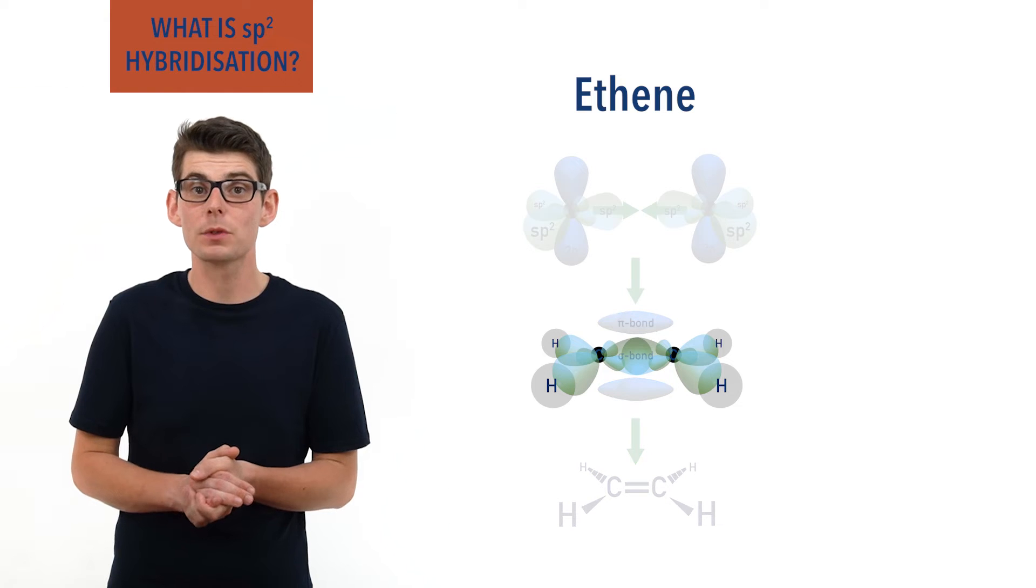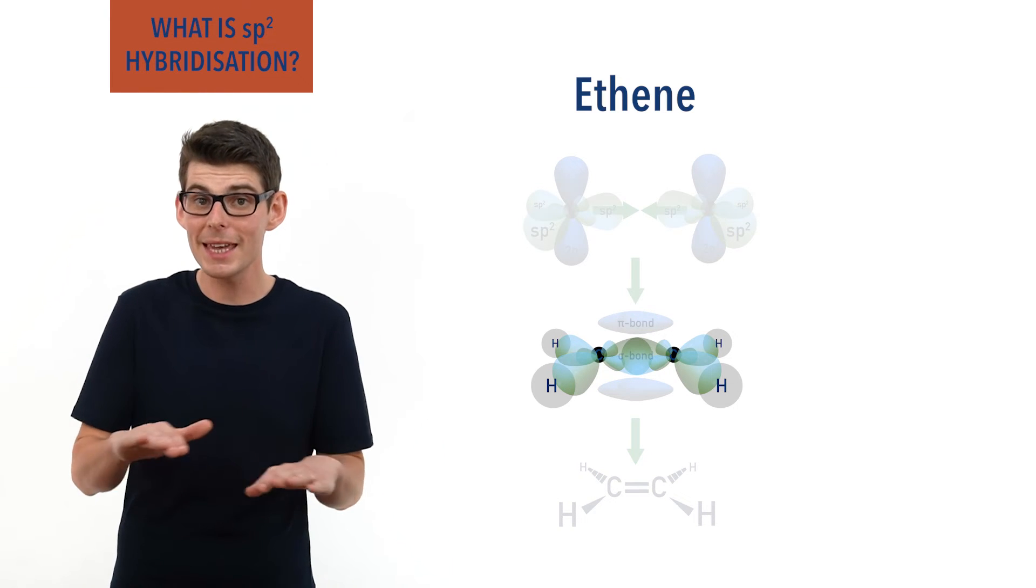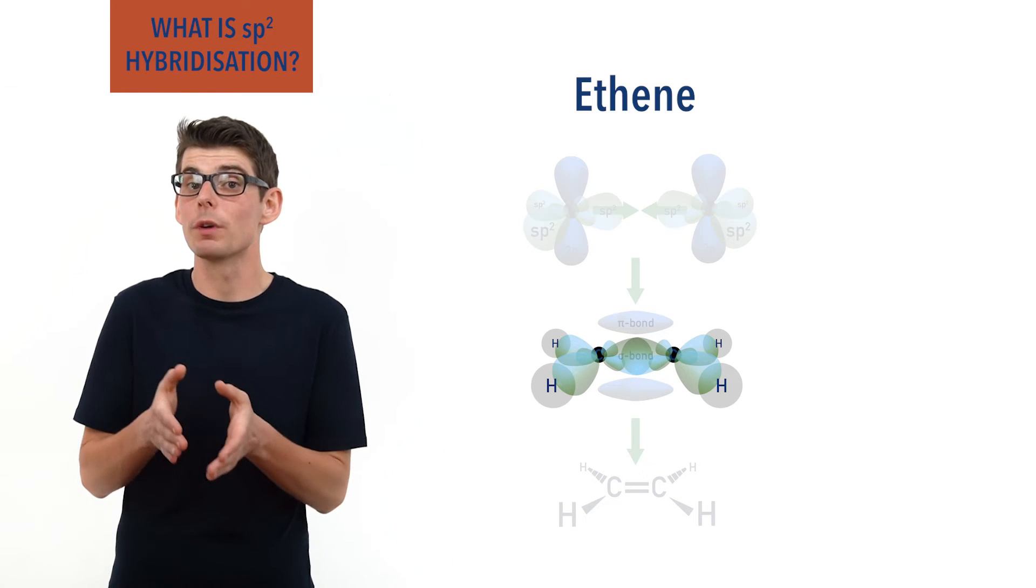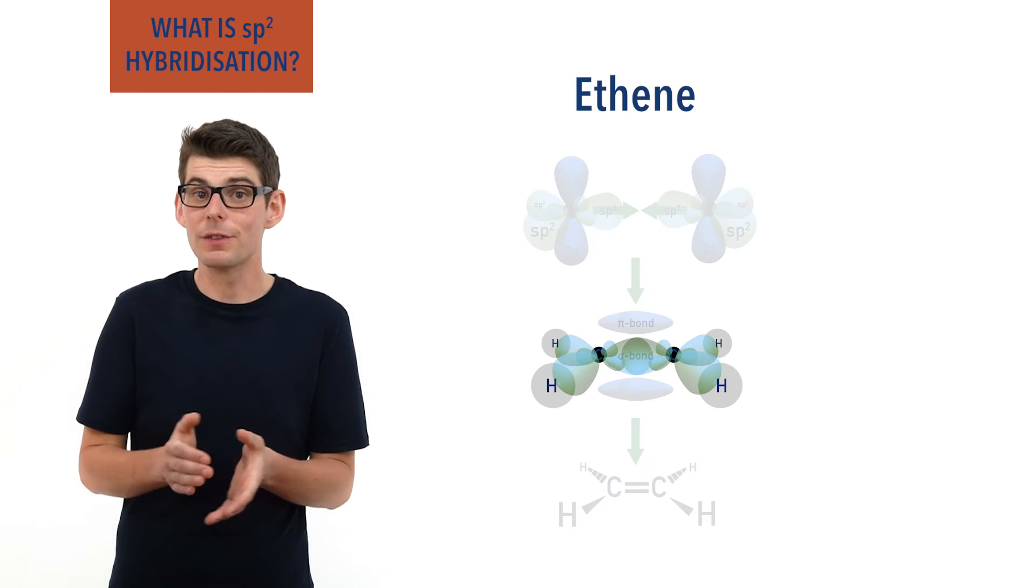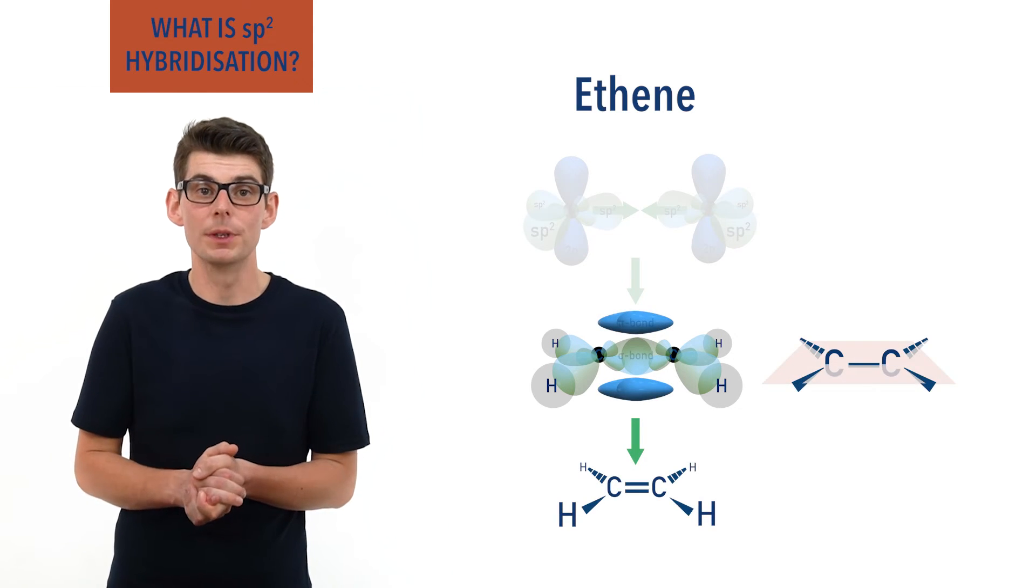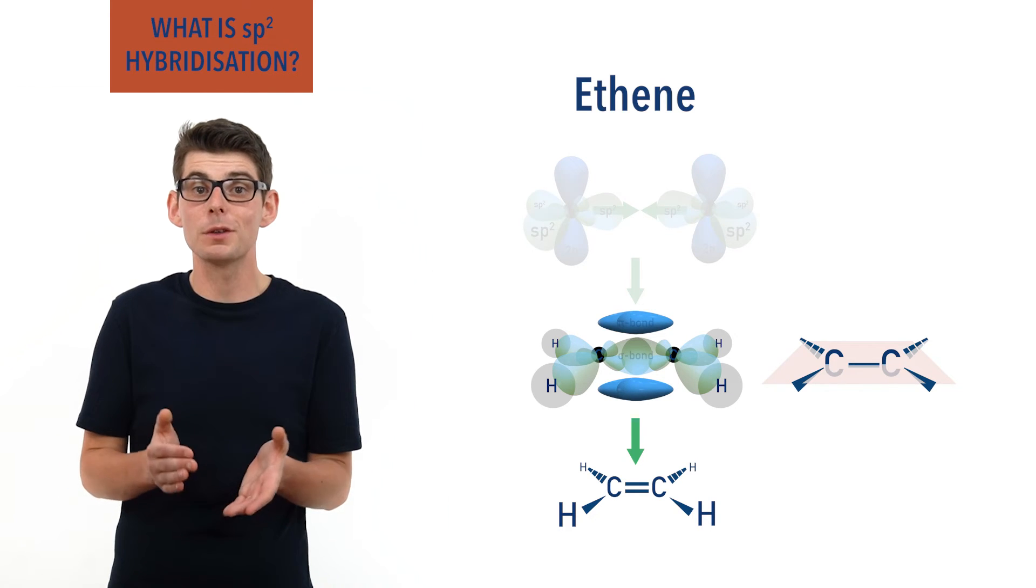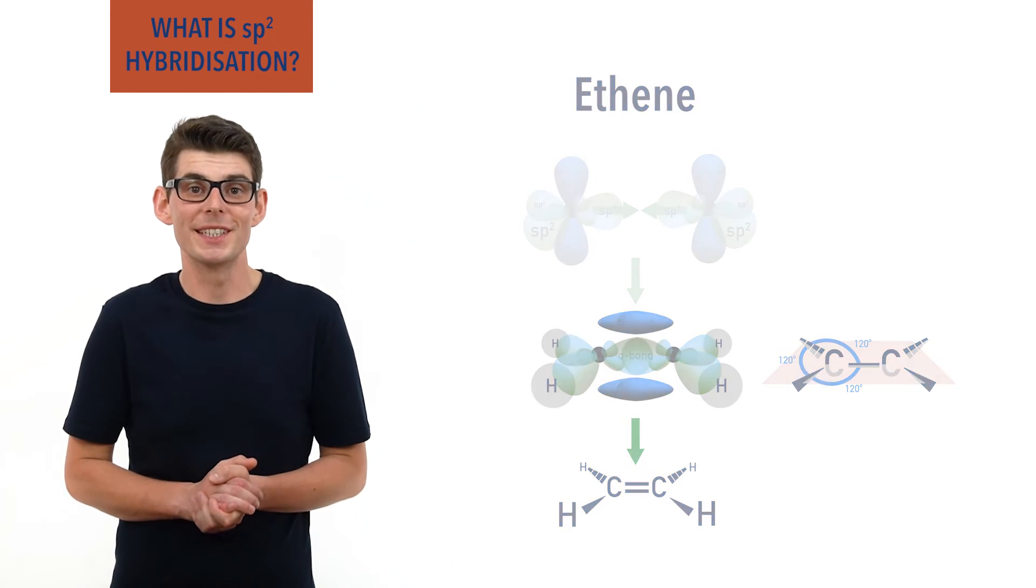The sp2 hybrid orbitals are all in the same plane on each carbon atom due to repulsion from the p orbitals forming the pi bond, and they all have a trigonal planar arrangement, giving a flat molecule with bond angles of approximately 120 degrees.